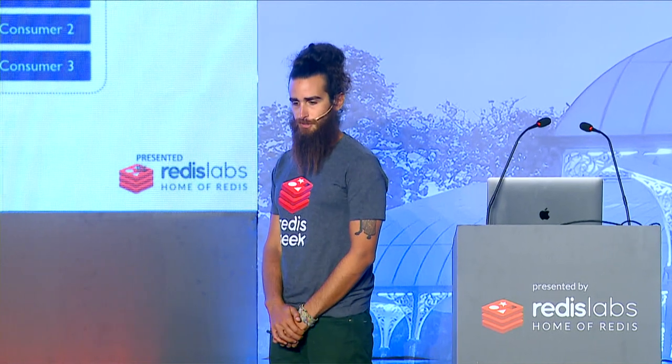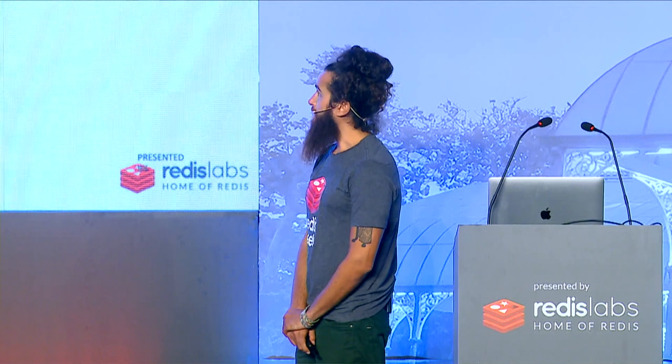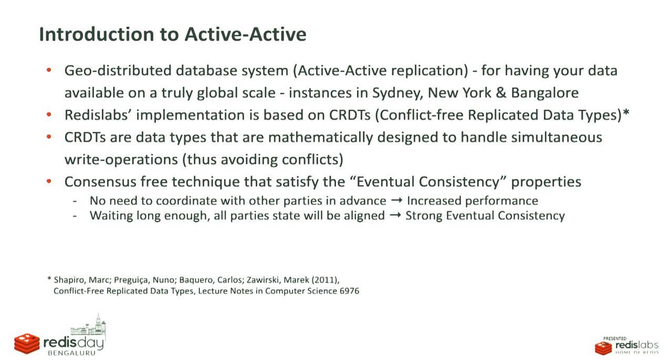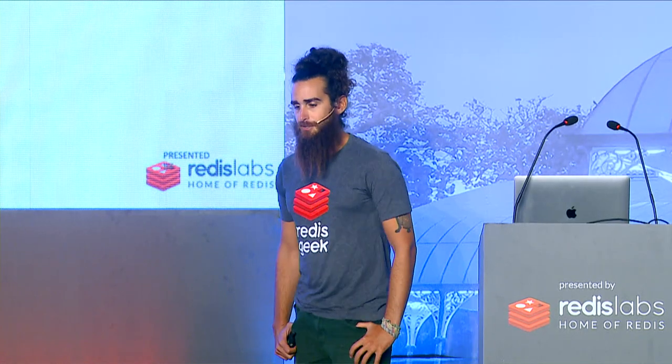Each stream can actually be processed by multiple consumers. Active Active — the geo-distributed database system, what we call Active Active multi-master — is, to be honest, an amazing product. The best engineers we have work on it, and I've been enjoying every second of the last few years working on this project. It's basically based on CRDTs, conflict-free replicated data types. Those data types were mathematically designed to avoid conflicts, meaning simultaneous write operations will not produce any conflicts whatsoever.